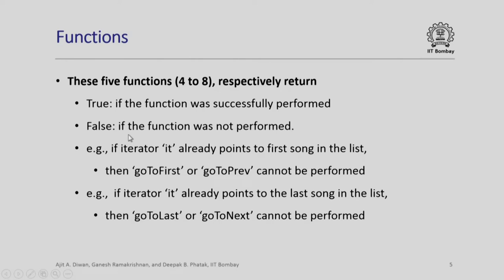Let us quickly look at some sample conditions under which the function may return false. For example, if the iterator IT already points to the first song in the list and we say go to first or go to previous, it cannot be performed because there is nothing previous. Similarly, if iterator IT points to the last song in the list, then go to last is meaningless, and go to next is meaningless because there is no next song. So when we implement these functions, the appropriate precautions have to be taken such that whether execution is successfully done or not is reported back.